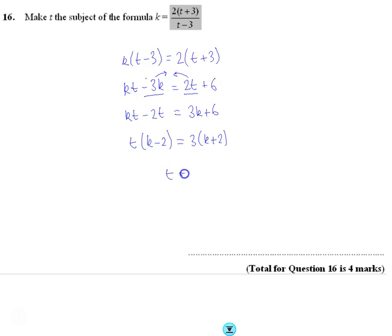We're now going to divide through by this bracket, so we get t = 3(k + 2)/(k - 2), and now we have t as the subject.